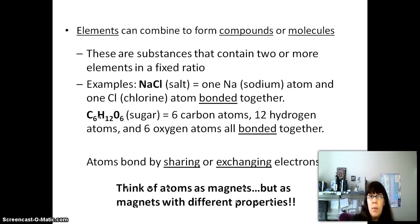Elements can combine with each other to form compounds or molecules. A compound is when you've got more than one type of element. Generally, your compounds and molecules have two or more elements in a fixed ratio. An example is sodium chloride (NaCl), which has a sodium atom and a chlorine atom bonded together. C6H12O6, which is a type of sugar, has six carbon atoms, twelve hydrogen atoms, and six oxygen atoms, all bonded together. Notice the subscript refers to the fact that you've got six of the carbons.